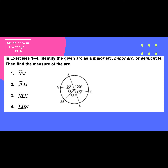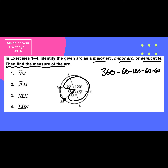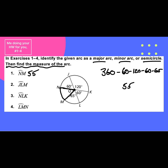Now I'm going to do your homework for you. Looking at exercise one through four: identify the given arc as major, minor, or a semicircle, then find the measure. We're going to find the measure first and then identify the type. Looking at arc NM — they give us all these other arcs besides Q, so 360 minus the rest of them would give us 55. Arc NM would be considered a minor arc.